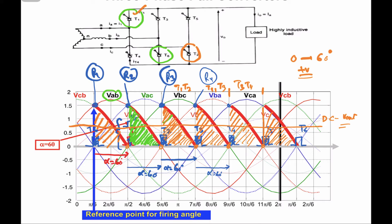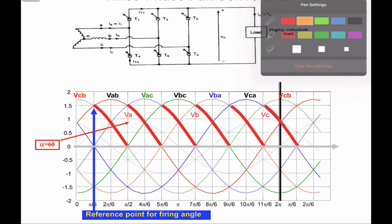For a resistive load, current becomes zero right at the zero crossing of the voltage and the thyristor turns off. But for an inductive load, current lags behind the voltage and will not become zero even when the voltage zero crossing arrives, so the thyristor keeps conducting and negative voltage appears across the load. You can eliminate that negative voltage by connecting a freewheeling diode in parallel with the load; without it, the negative voltage will appear.